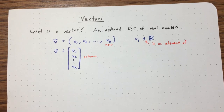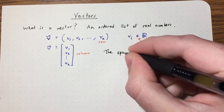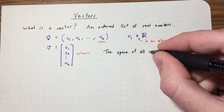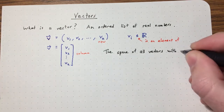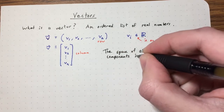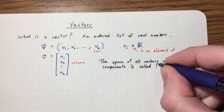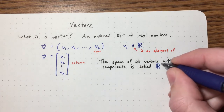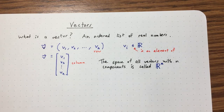We can think of these vectors as living in a space — specifically the space of all vectors with N components. That space is called R^N, indicating real entries. It looks like R to the Nth power.